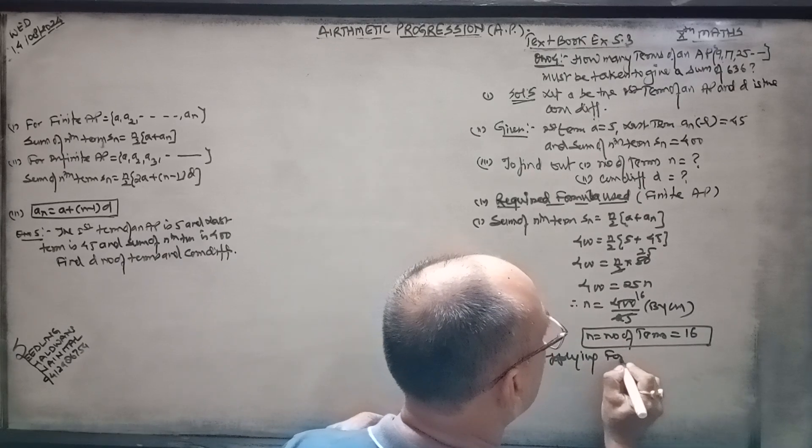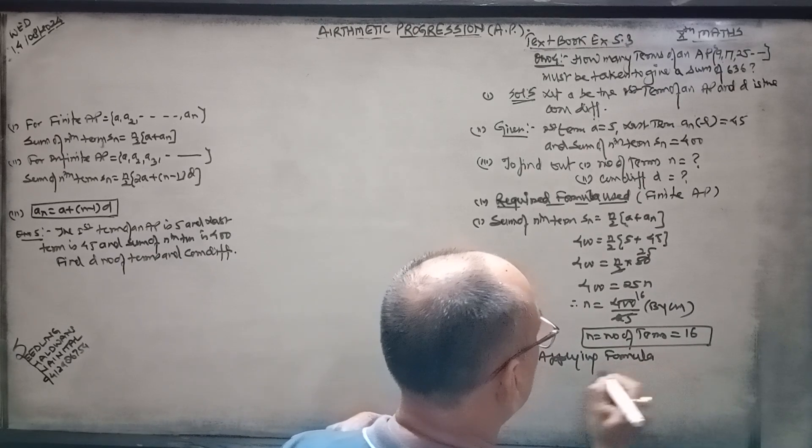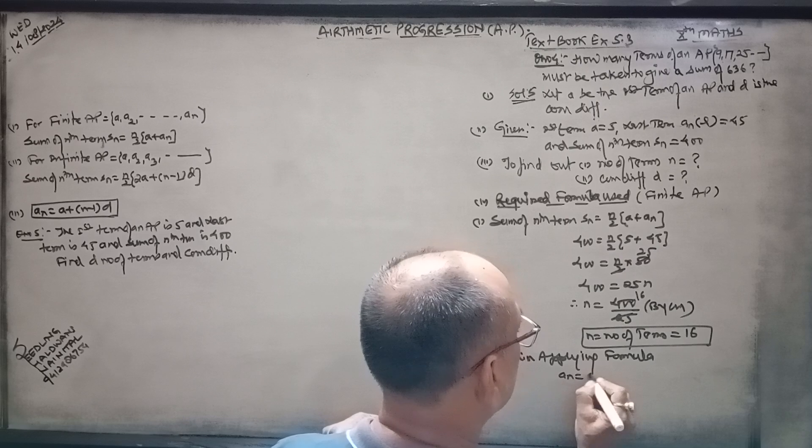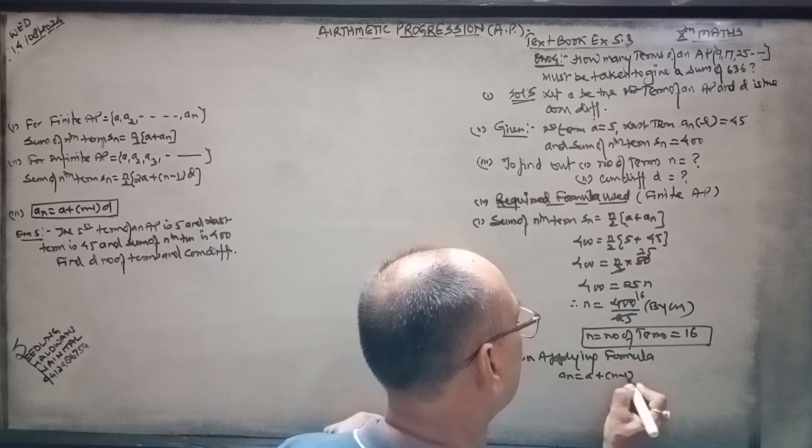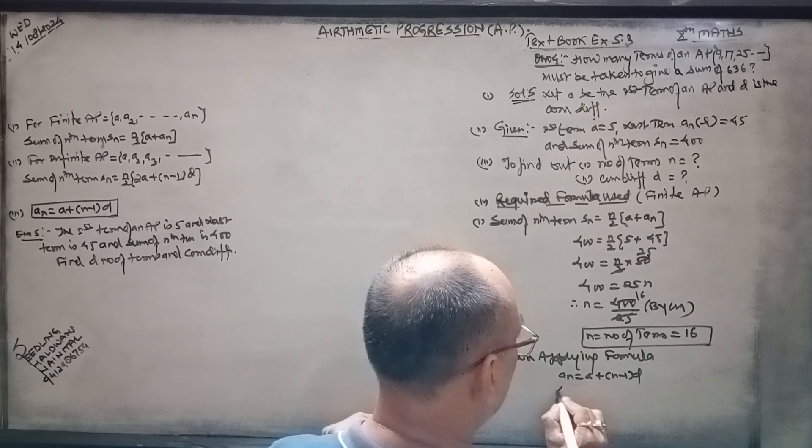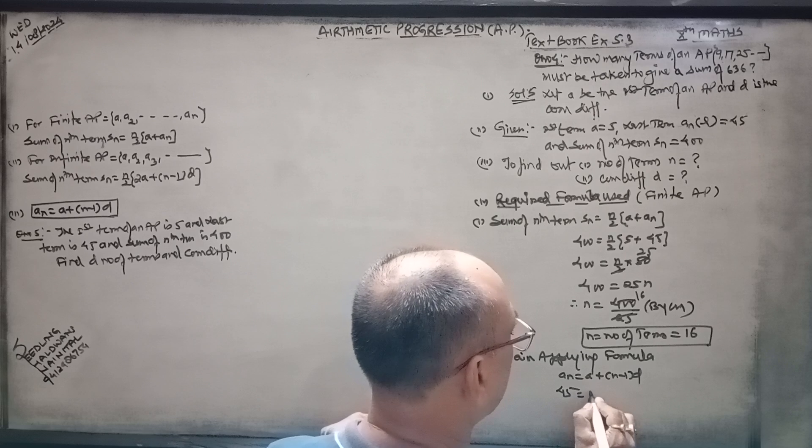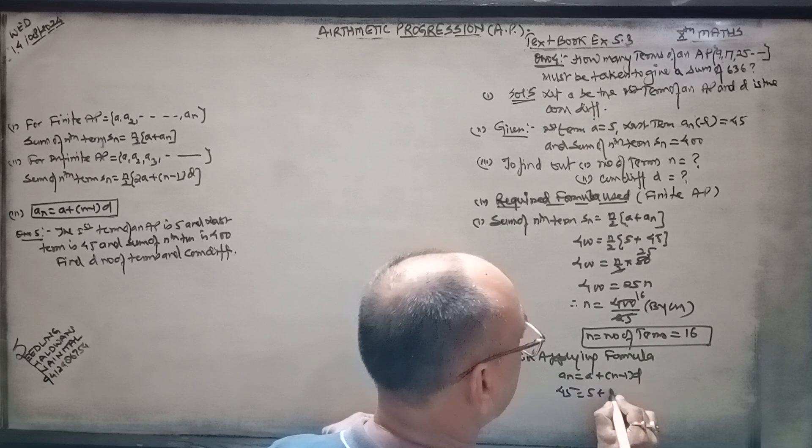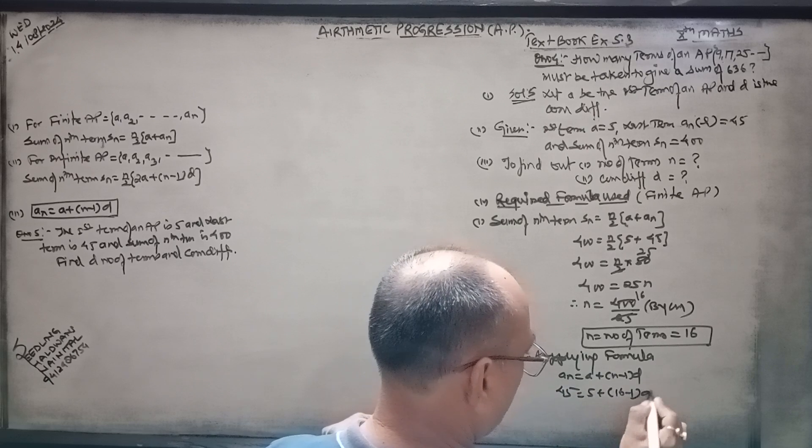An equals a plus (n minus 1) times d. An is 45, a is 5, plus n is 16 minus 1 times d.